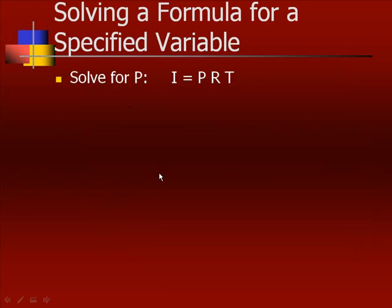Now, the last thing in this module, solving a formula for a specified variable. To solve for a variable means to get that variable on a side by itself. This first formula is solved for i equals. We want to solve for p. If you'll notice that p is being multiplied by rt, then to undo that, or to get p by itself, we are going to divide both sides by rt. That way, those cancel, so we get p equals i over rt. That's what we're talking about when we say solve for a specific variable.